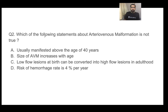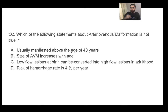The next question: which of the following statements about arteriovenous malformation is NOT true? The options are: (A) usually manifested above the age of 40 years; (B) the size of the AVM increases as the child grows; (C) low-flow lesions at birth can be converted into high-flow lesions in adulthood; and (D) the risk of hemorrhage rate is 4% per year.